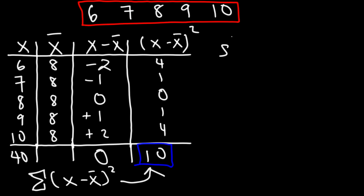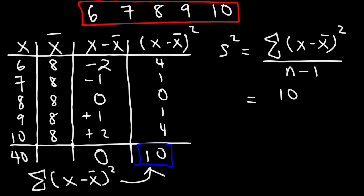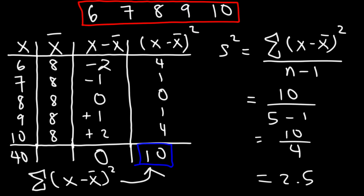The variance, represented by s squared, is the sample variance. It's the sum of the squared deviations divided by n minus 1. We already know that sum is 10, n is 5, and 5 minus 1 is 4. 10 divided by 4 is 2.5. So this is the sample variance of the data — s squared equals 2.5. That's how you calculate the sample variance.